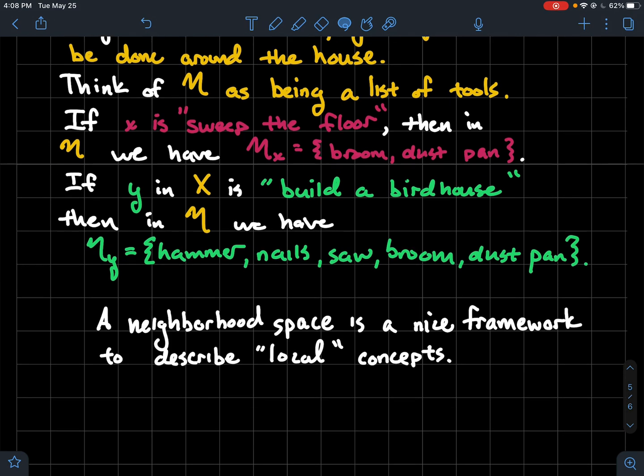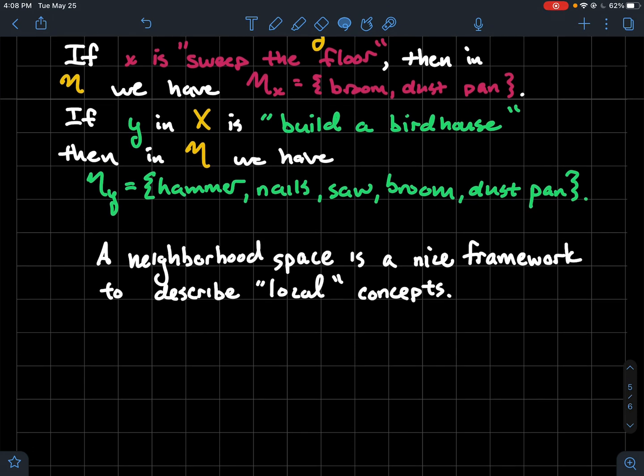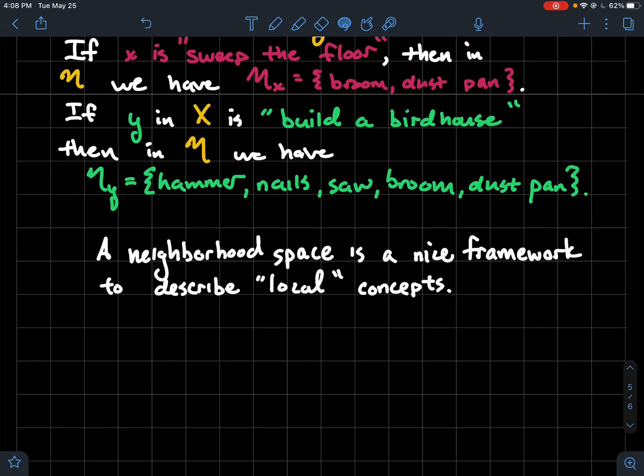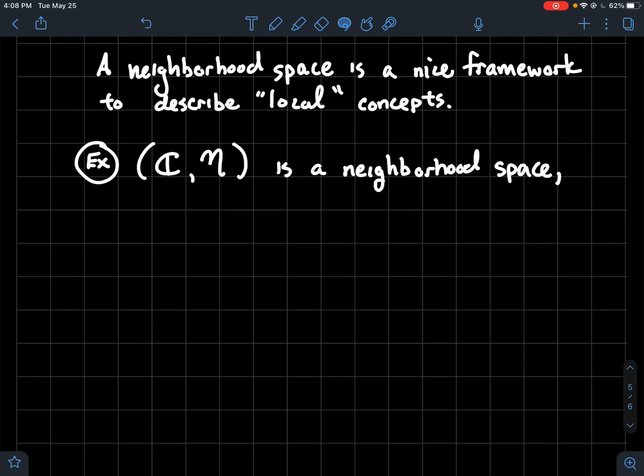And so a neighborhood space is kind of a nice framework to describe what you might call local concepts. So concepts that you need to check at a particular point, like near a particular point. And if you're in topology there's a chance that you've probably had real analysis or maybe even complex analysis. So if I think about say the complex numbers, the complex numbers form a neighborhood space where let me tell you about what it means to be a neighborhood. Given a particular complex number z naught.